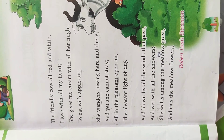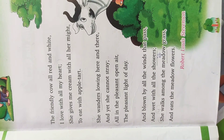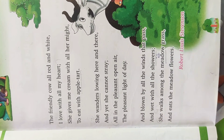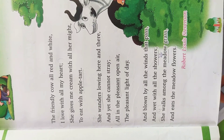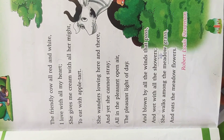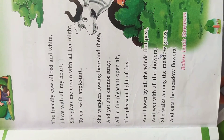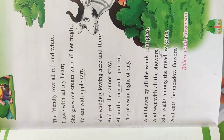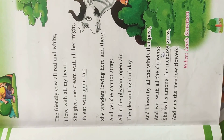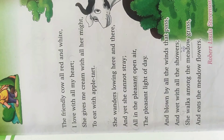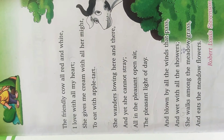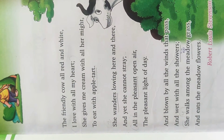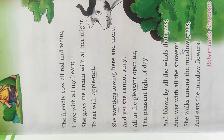She wanders lowing here and there, and yet she cannot stray, all in the pletient open air, the pletient light of the day. Vai yawa ghoom di hai, par bhatakti nahi hai. Dyn ki roshni mein, kholi hawa mein, vai puri khushi ke saad ghoom di hai.